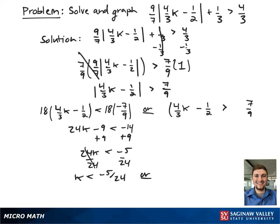Now we're going to go to the right hand side, and we're going to begin by multiplying out both sides by 18 again so we can get rid of all our fractions. This gives 24k minus 9 is greater than 14.